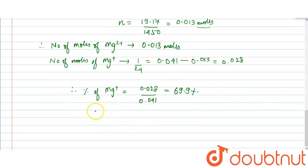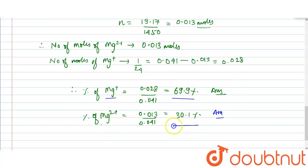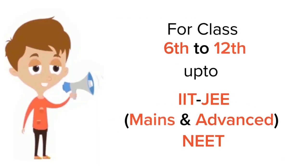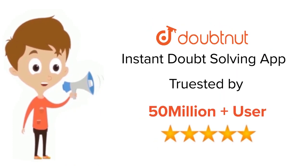Similarly, percent of Mg²⁺ = (0.013 ÷ 0.041) × 100 = 30.1%. So the answers are: 69.9% Mg⁺ and 30.1% Mg²⁺. Thank you. For class 6 to 12, IIT-JEE and NEET level — trusted by more than 5 crore students — download DoubtNet today.